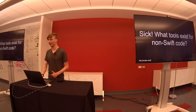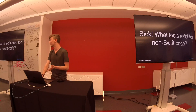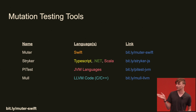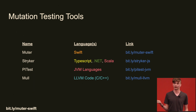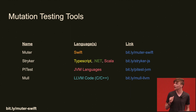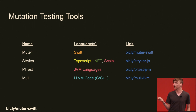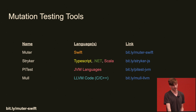Even if you don't write Swift code, this practice has been around since the 70s and there's a tool for most major production languages. There's Muter for Swift — it's the only tool that does Swift. If you do TypeScript, .NET, Scala, or JavaScript, there's Stryker. Stryker is leading the wave on standardizing reports and making this user-friendly. For JVM languages — Scala, Kotlin, Java — you have PIT, which is the canonical standard for a lot of this. For C and C++ using LLVM compilers, you can use Mull. The folks behind these tools are really smart, friendly, and happy to help you get set up.